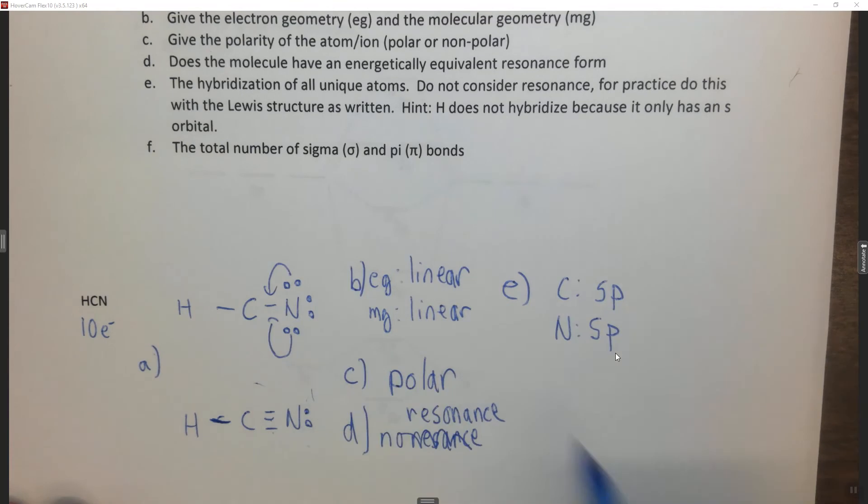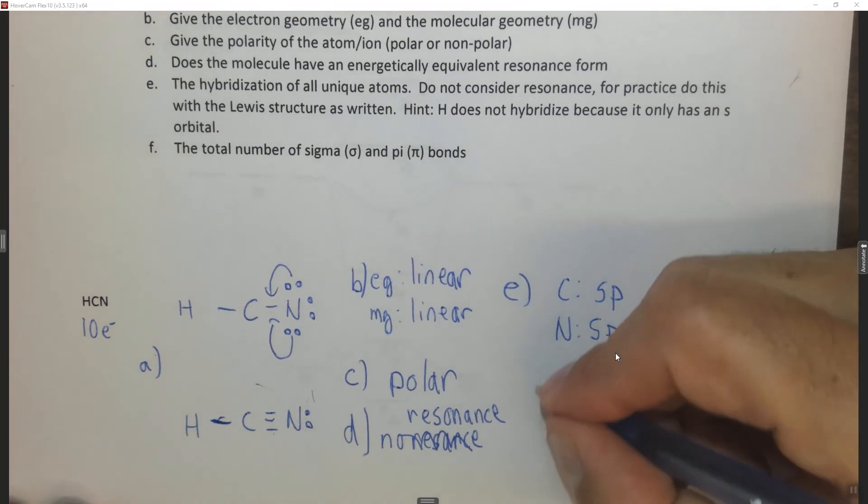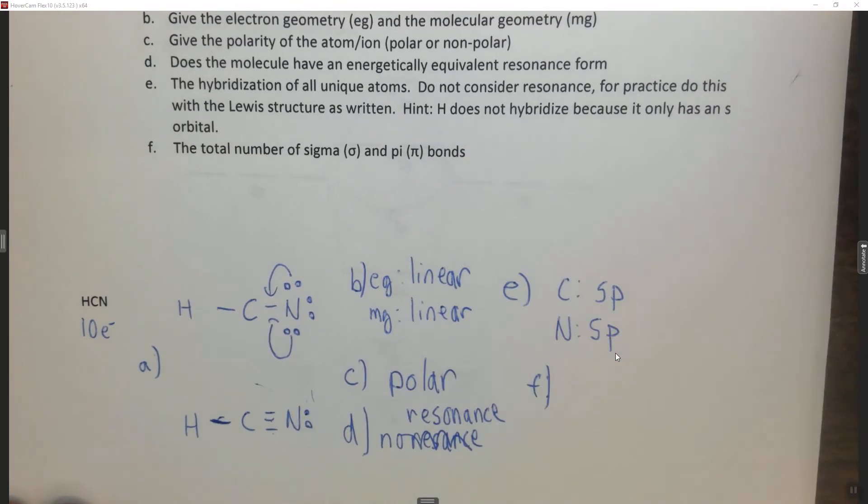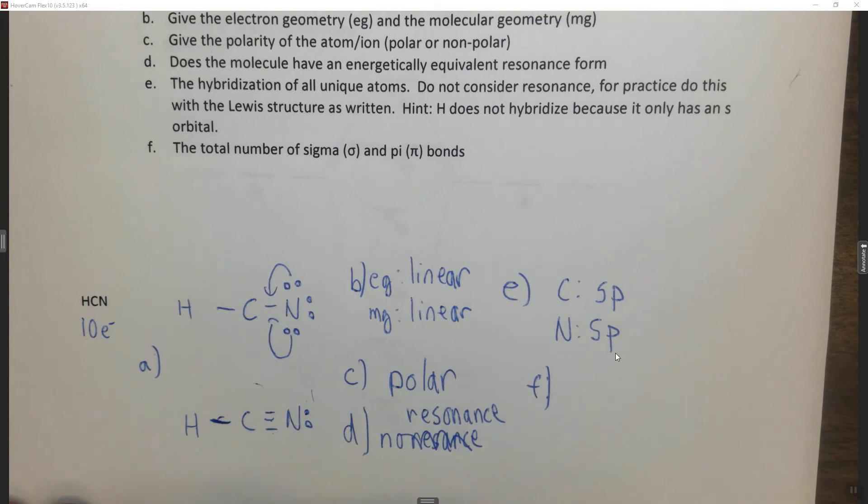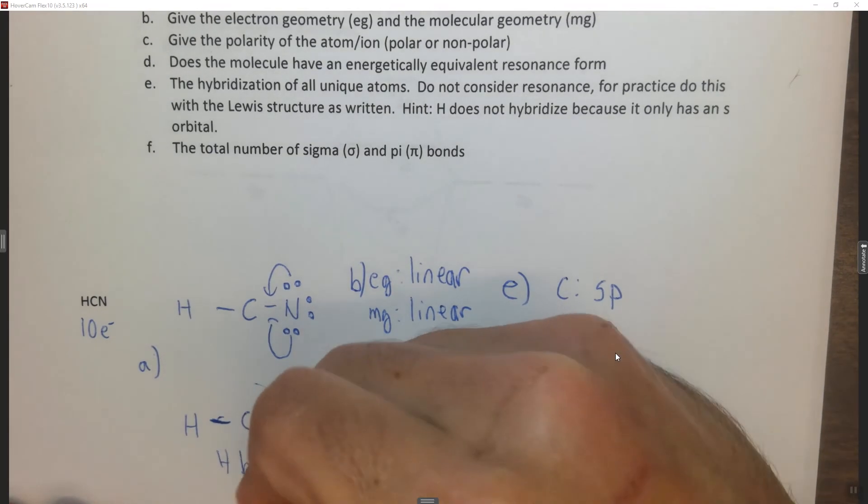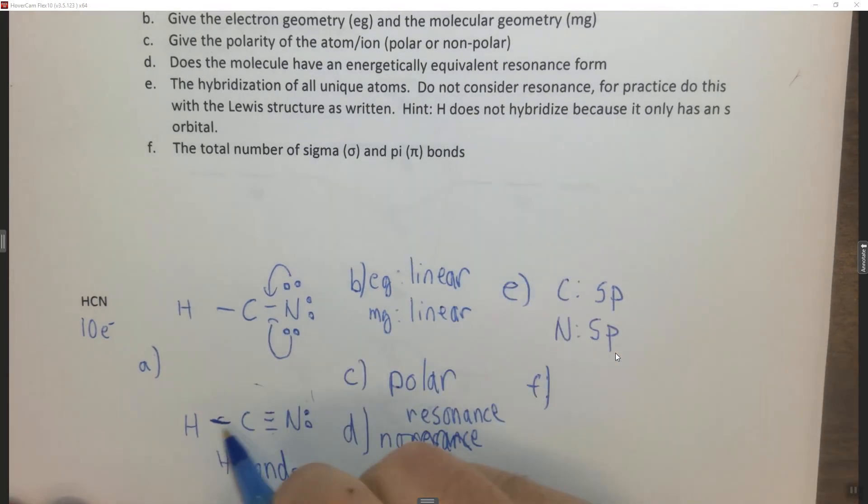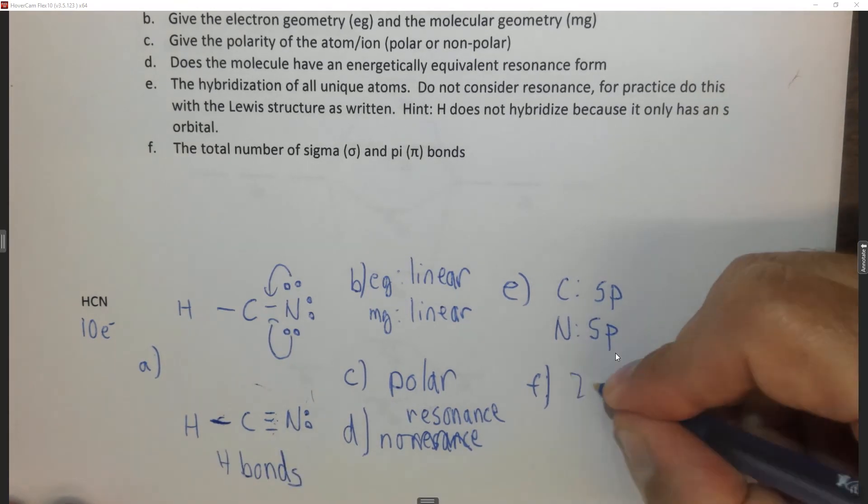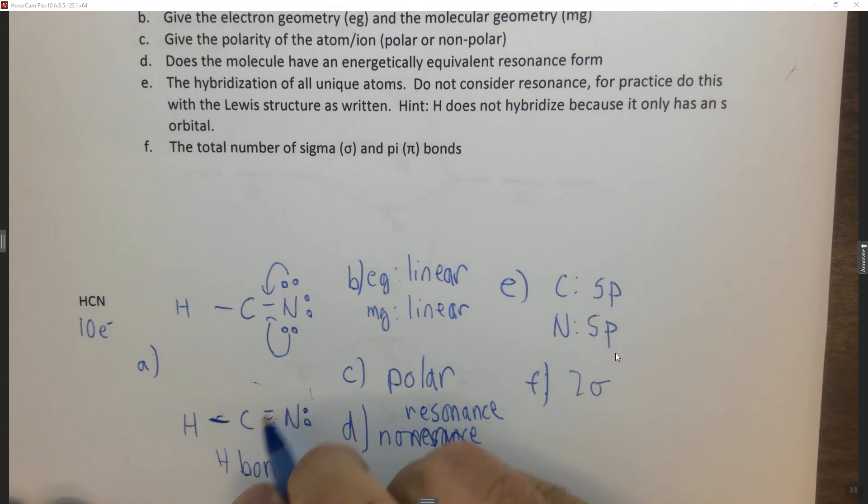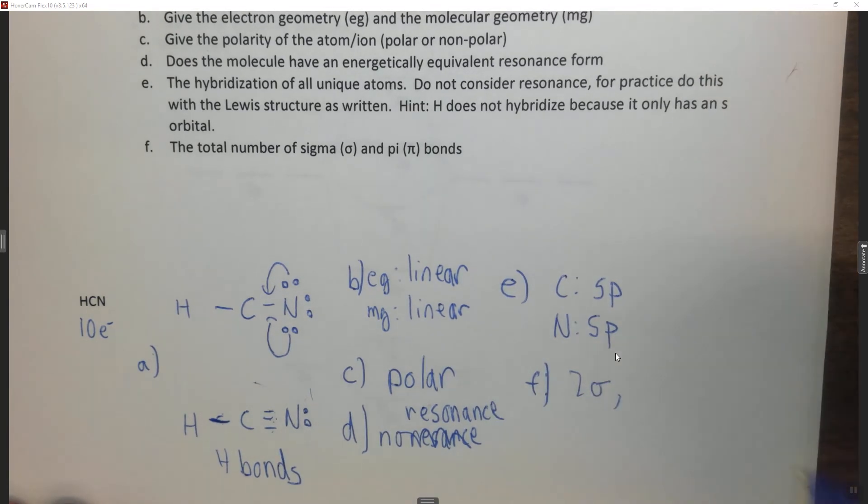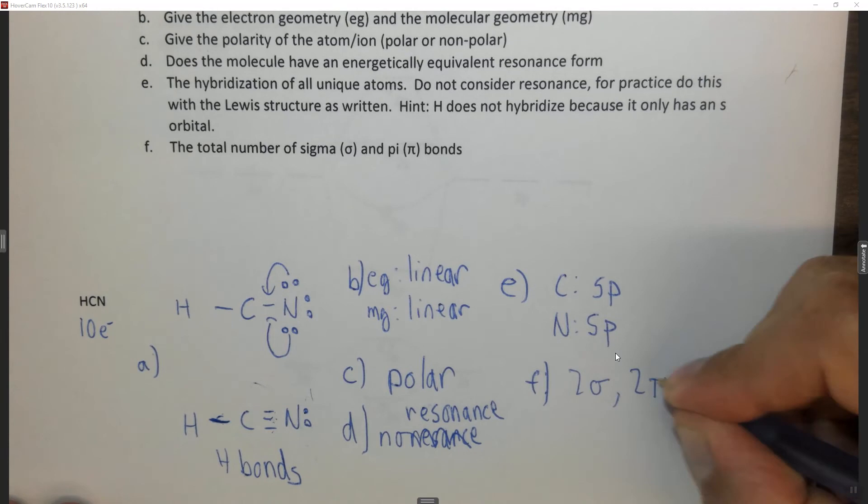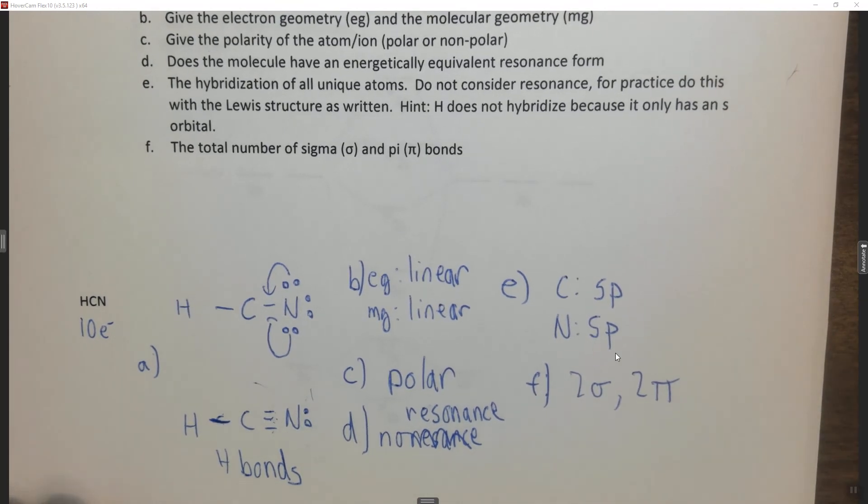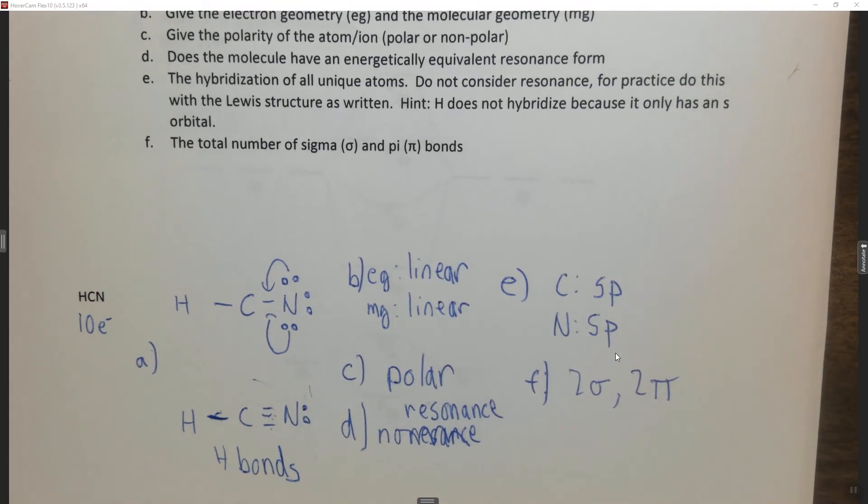And it wants to know the total number of sigma and pi bonds for part f. Alright, so if we look at this we have a total of four bonds. One, two, three, four. One, two, this bond and the first bond of the triple bond are sigma. The other two bonds of the triple bond are above and below the plane and inside and out of the paper. So there are two pi bonds as well for a total of two plus two, which is four bonds.